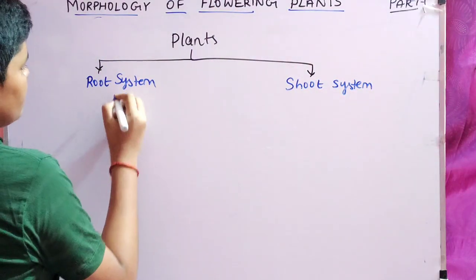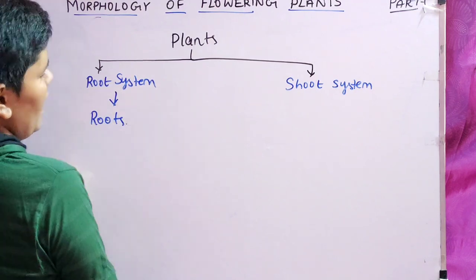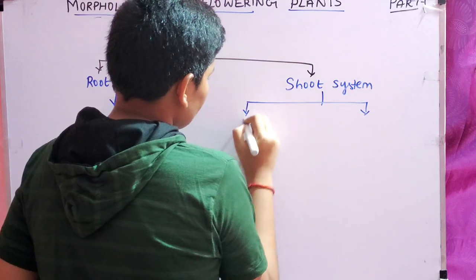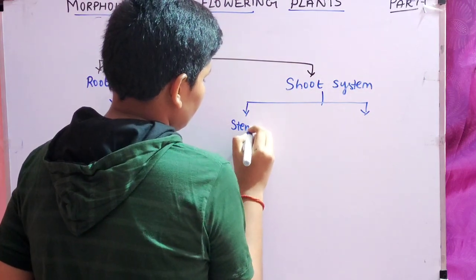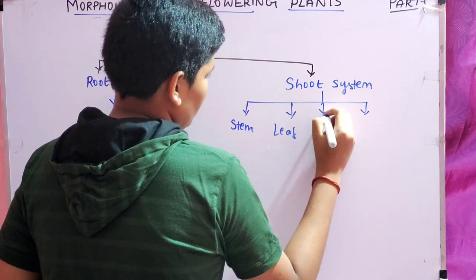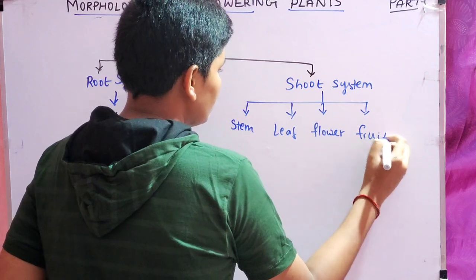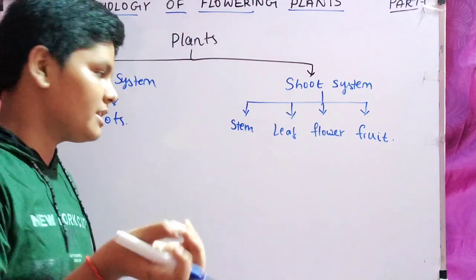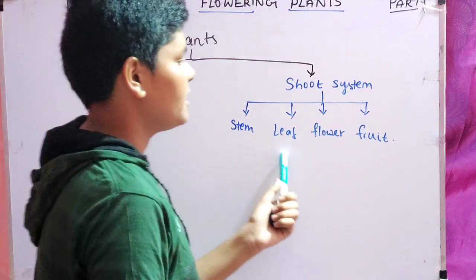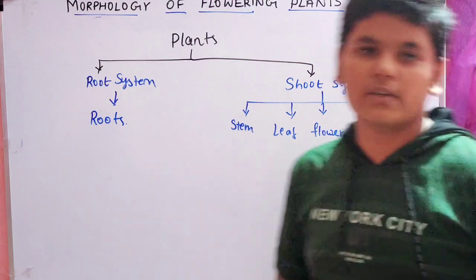In the root system we have the roots. In the shoot system we have stem, leaf, flower, and fruit, along with modifications and some other extra parts. So the root system has roots and the shoot system has stem, leaf, flower, and fruit. These are the main parts of plants.